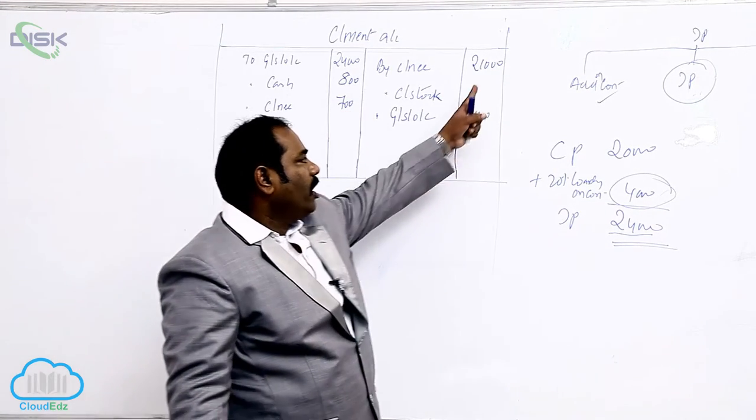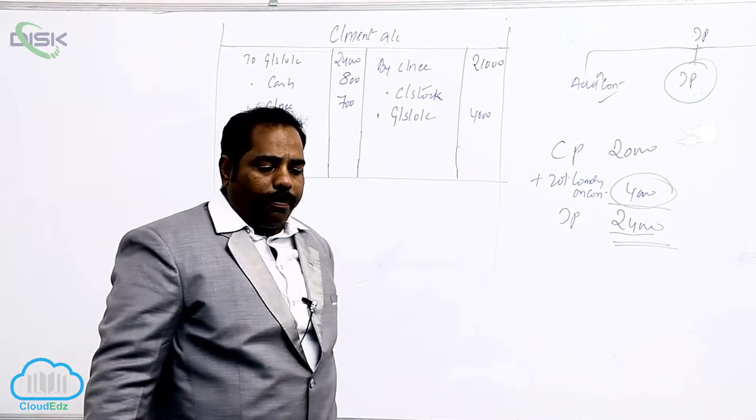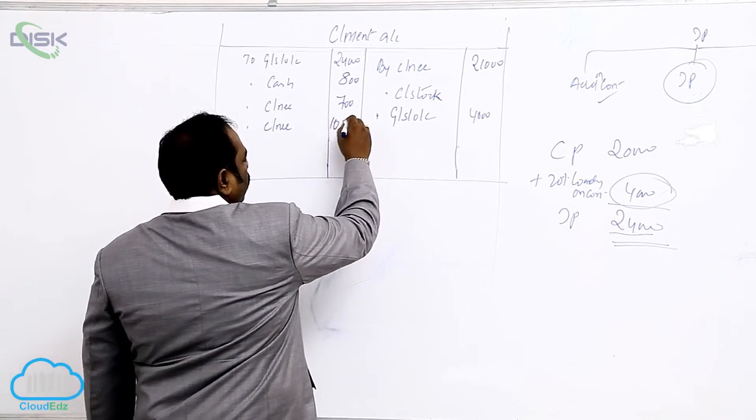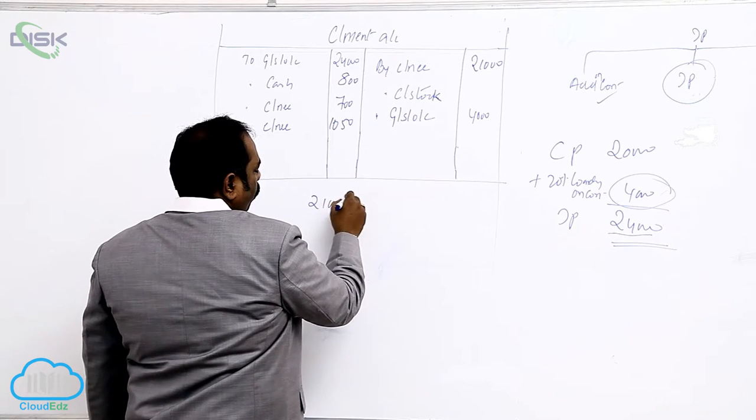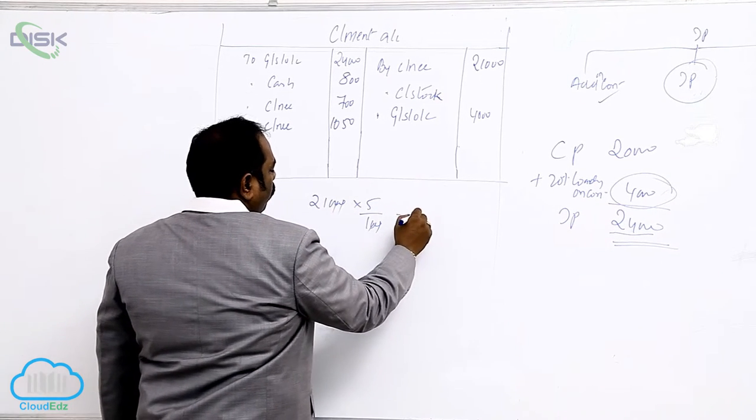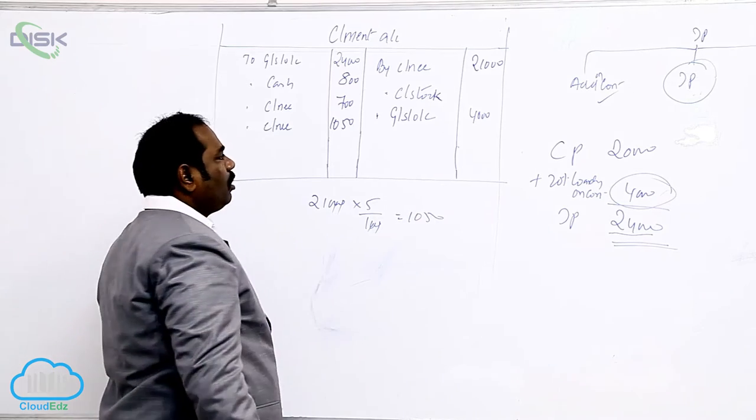And on 21,000 is charging a commission of 5%. On 21,000, 5% comes to 1,050. 21,000 into 5 by 100. So 1,050 is commission payable to consignee.